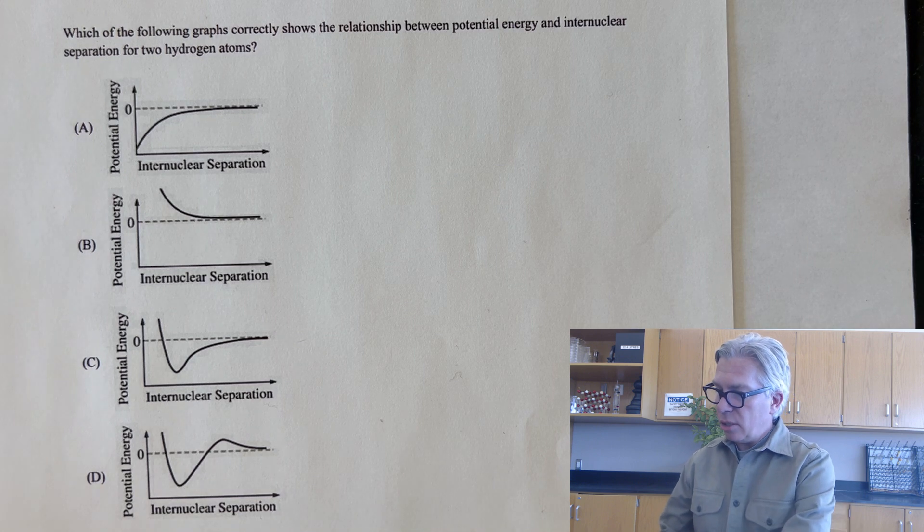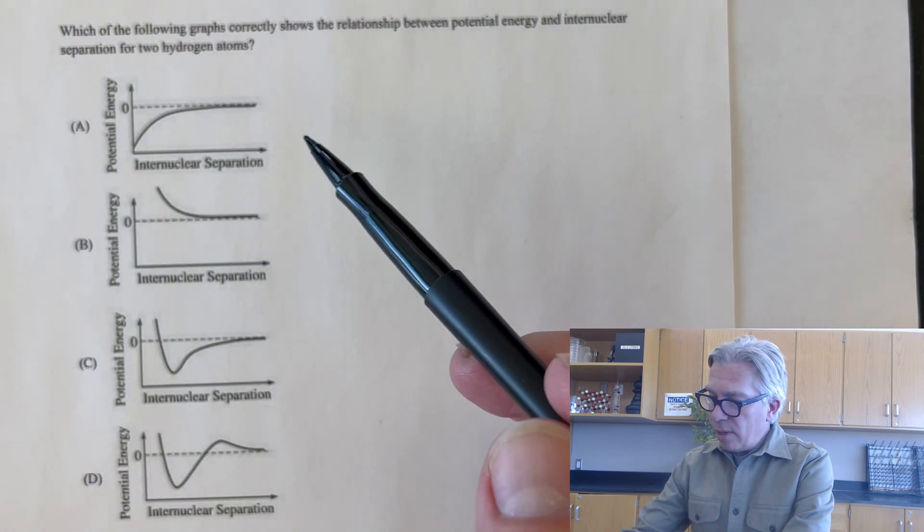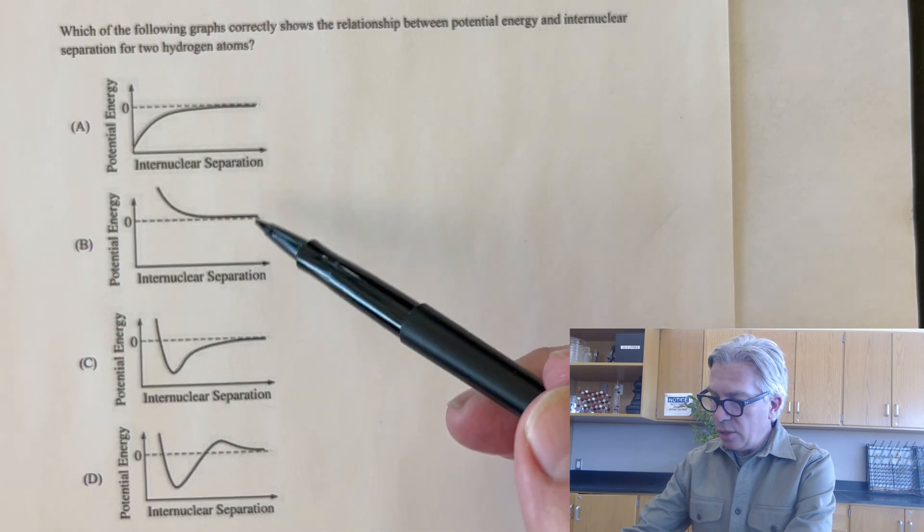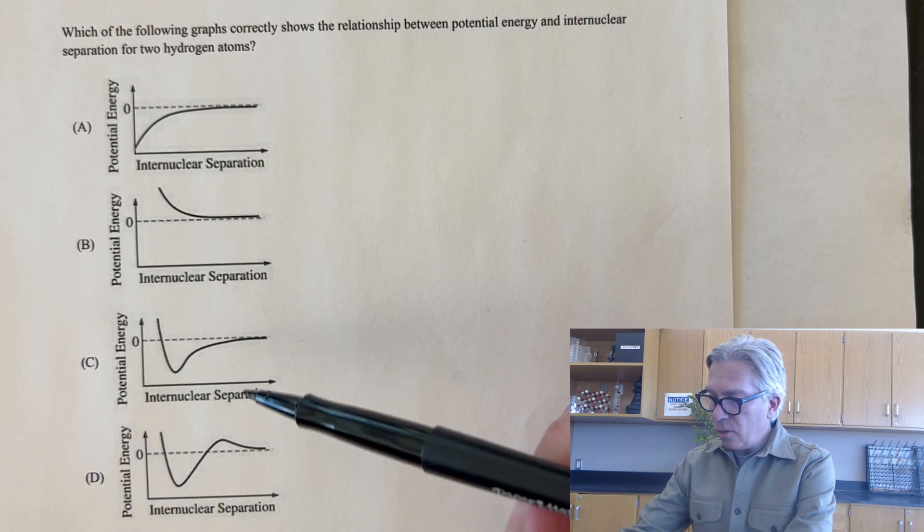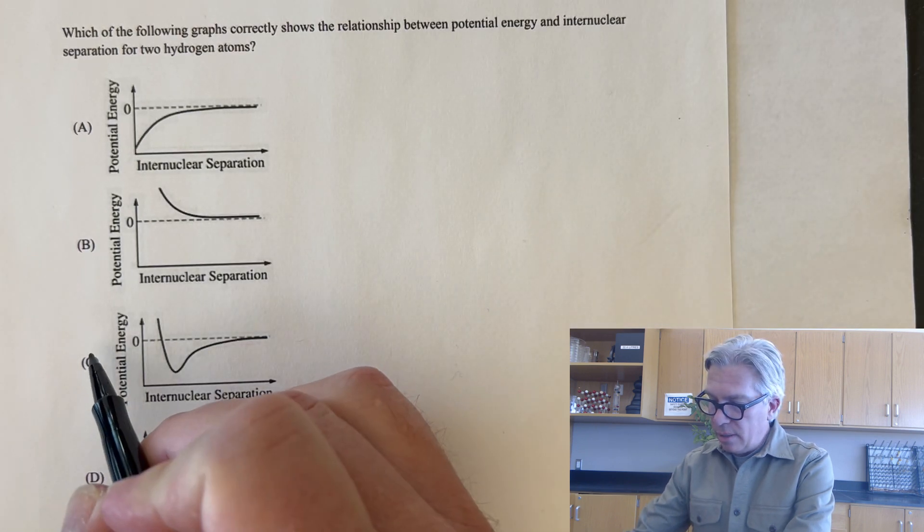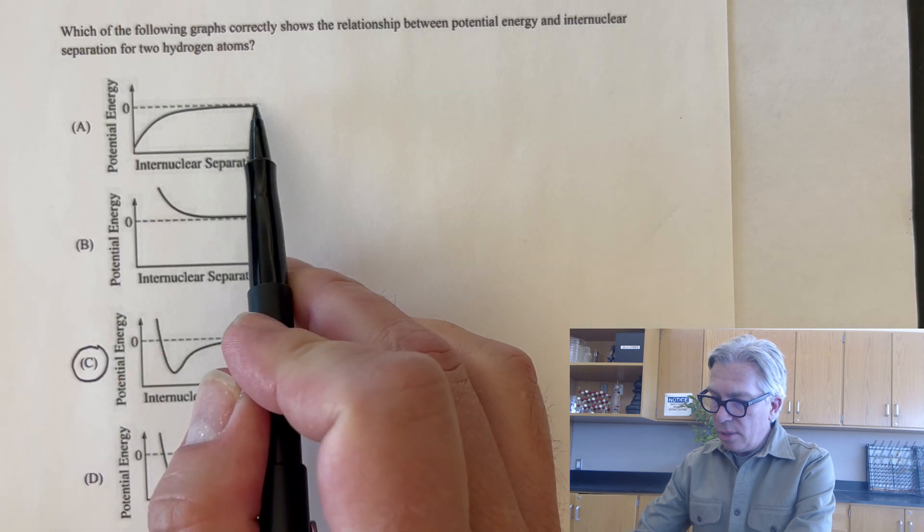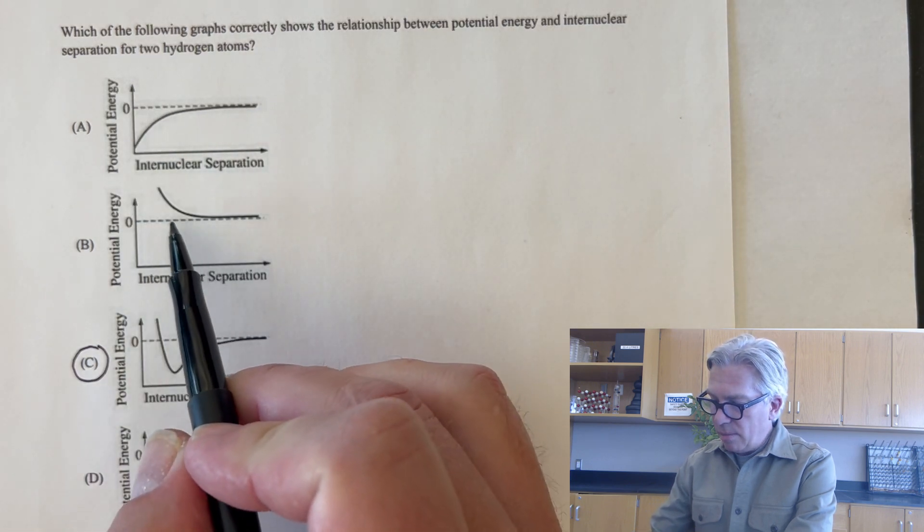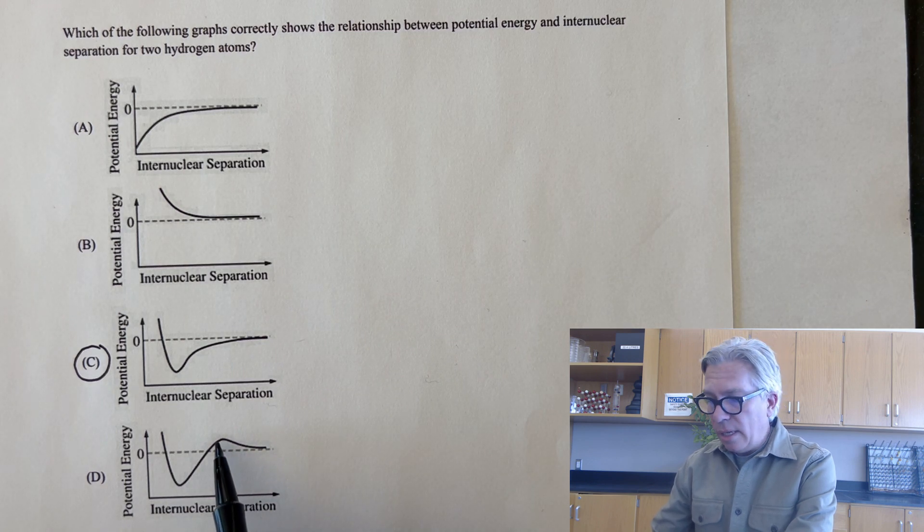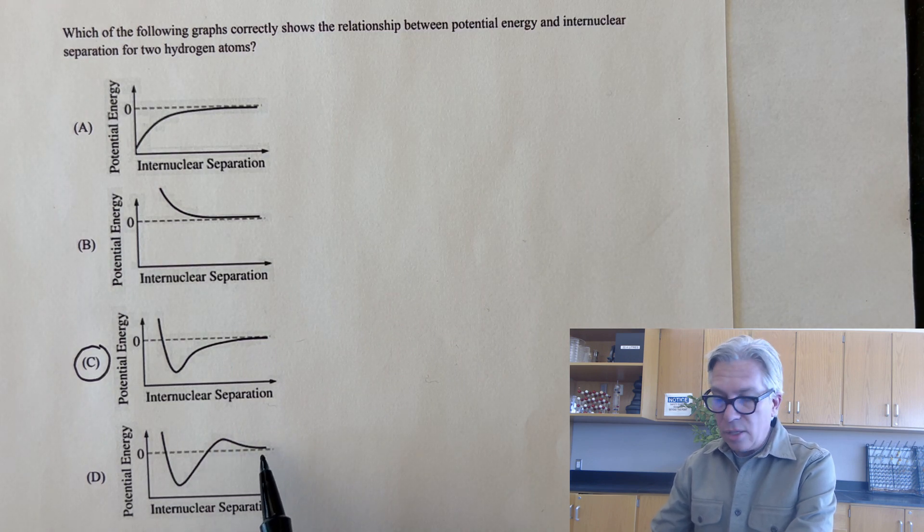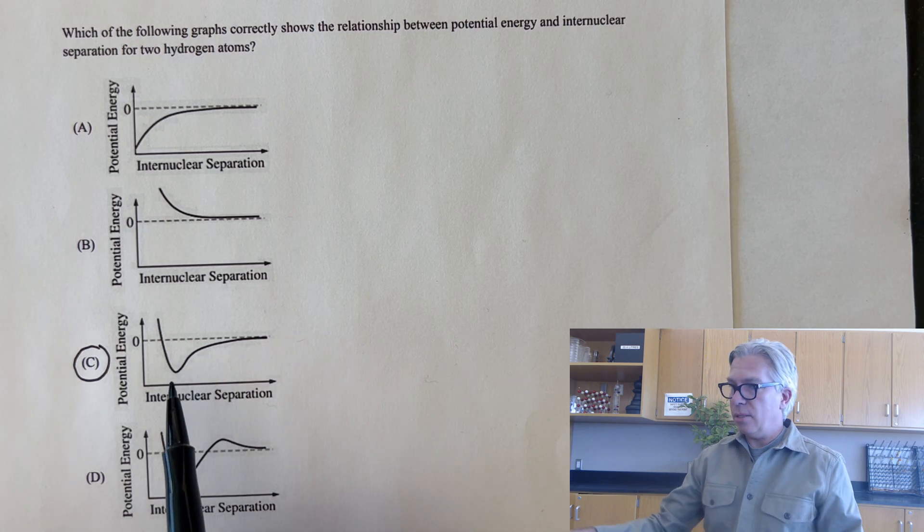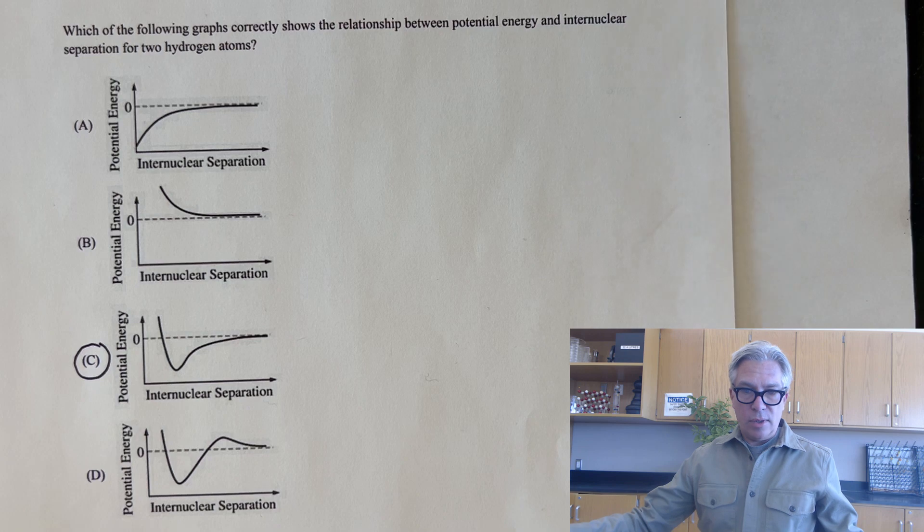We've already looked at the graph of the potential energy diagram and there's only one graph in here that really looks like that. And that is graph letter C. This one doesn't work. This doesn't match the same shape. This kind of matches the shape, but there is no increase in energy as the nuclei get close to each other. They basically just lower the energy until they get to that minimum.